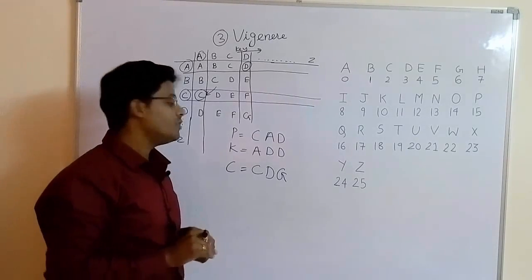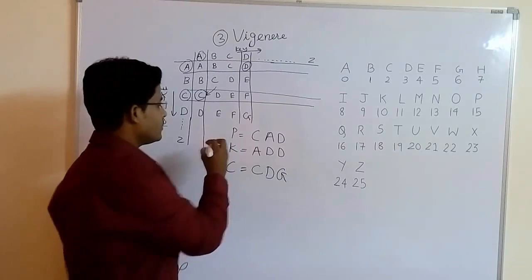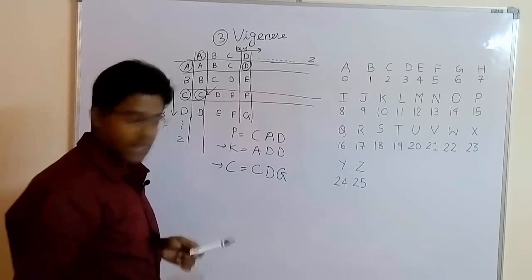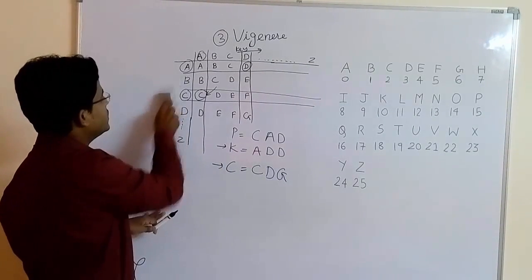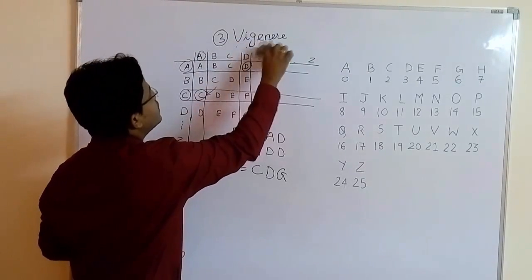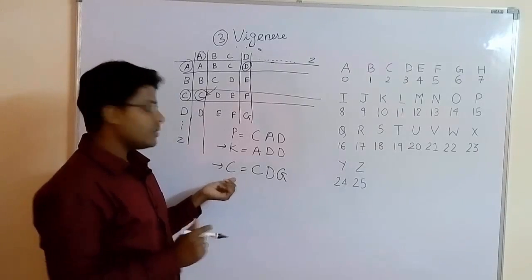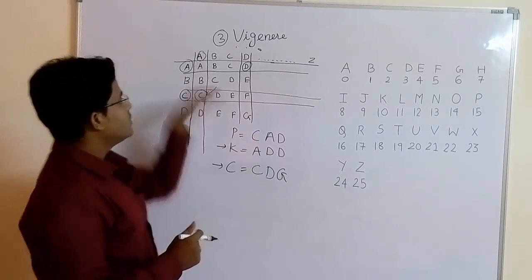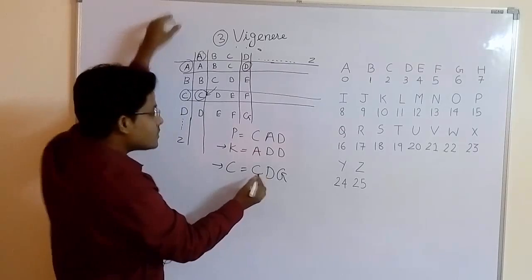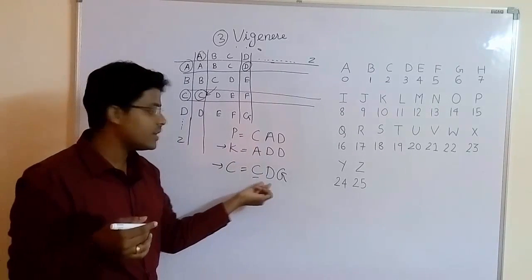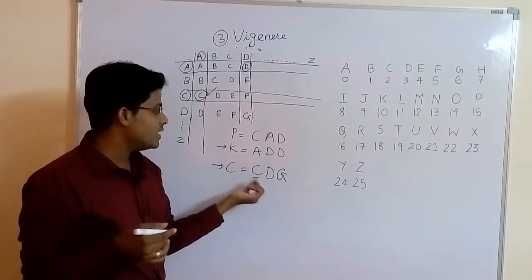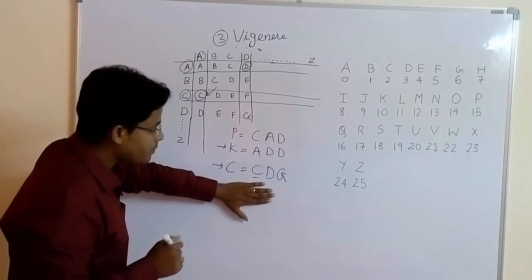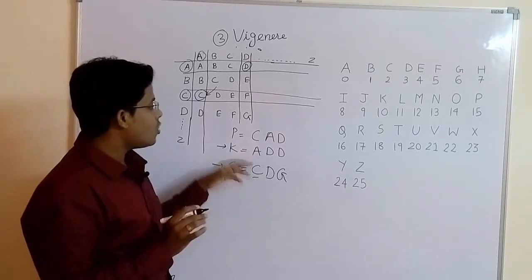Now let's see how we do the decryption process. In decryption process we are having the key and we are having the cipher text. So in the decryption process it is a bit different. Let's see how to do decryption. In decryption we want to get the plain text C, A, D from the cipher text C, D, G. See how it is done. Cipher text first letter is C. We are solving letter by letter. We take first alphabet first, that is C. Now what you have to do — you have to see the key.